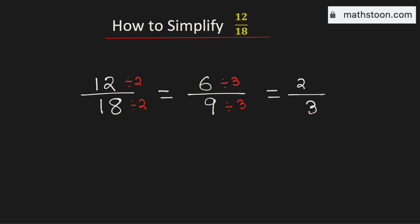As both 2 and 3 are prime numbers, this fraction cannot be simplified any further. Therefore 2 over 3 is the simplified reduced form of the fraction 12 over 18 and this is our final answer.